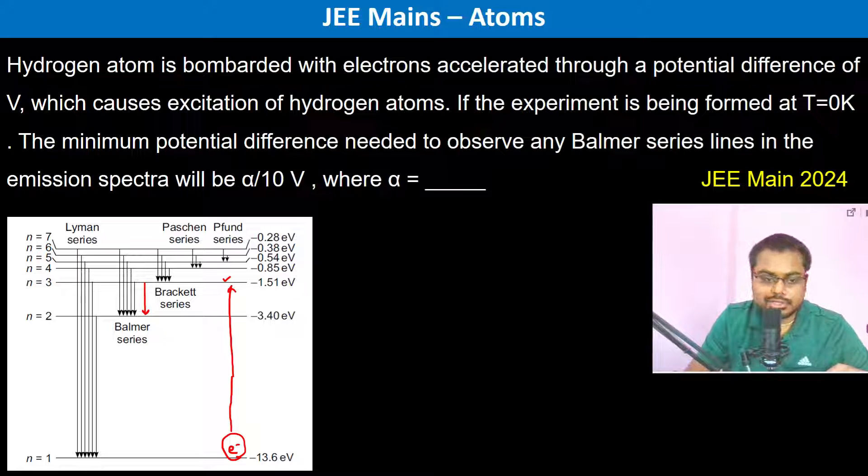So therefore, if we see here, the energy which is required is equal to how much? 13.6 minus 1.51. So 13.6 minus 1.5, this is almost equal to 12.1 electron volts.